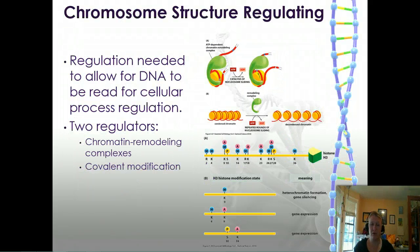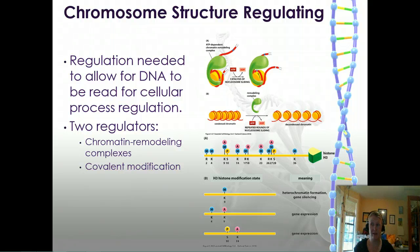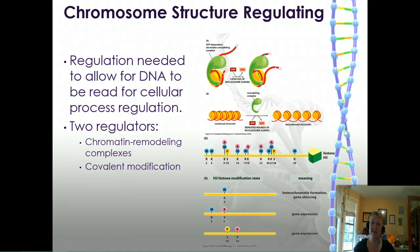Chromosomes need to be restructured, read, and regulated all the time. There are two processes that allow DNA to be read for cellular regulation. First, the chromatin remodeling complex uses ATP enzymes to open chromosomes for reading and then close them back down. Second, covalent modifications are tags placed on the outside of genes that determine whether a gene should be silenced, expressed, or upregulated. If these tags are modified too much, we can see too much protein production or excessive cell division — such as cancer. We'll talk about that more on the next slide.